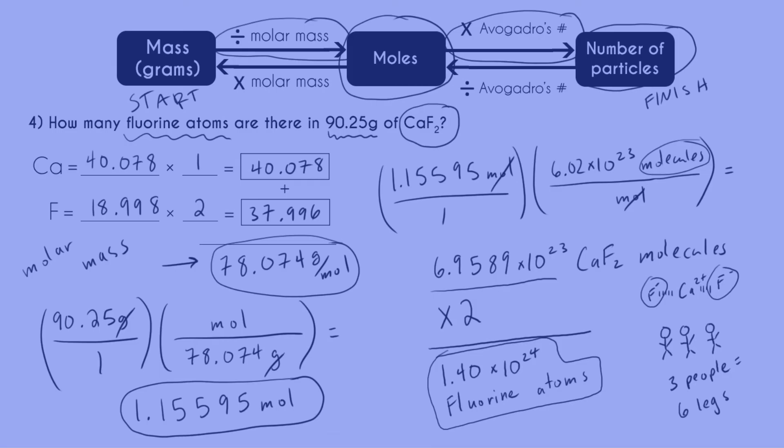So that equals 1.40 times 10 to the 24th fluorine atoms. And for sig figs, I had four from my original number. I had three from pulling in Avogadro's number. And then I made sure that I calculated a molar mass that had more than three and four sig figs. So that didn't contribute to my sig figs in any way. All right. Hope this video was useful. And as always, happy studying.